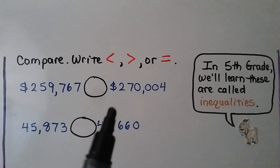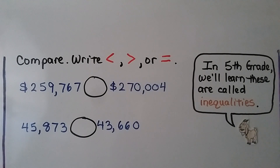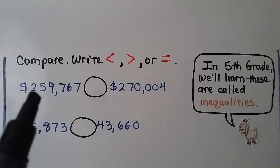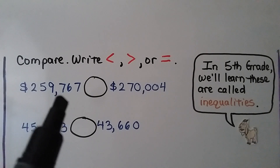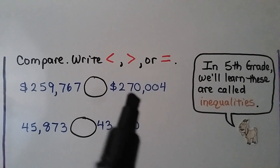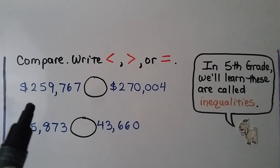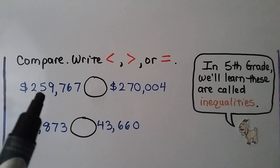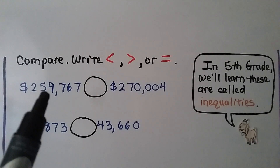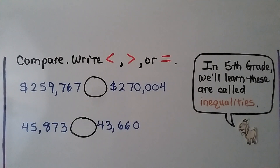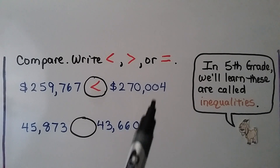We need to compare these numbers and write a less than, greater than, or equal to sign in the circle. We have money: $259,767 and $270,004. They both have a 2 in the hundred thousands place, so we look at the next digit. This has a 5 in the ten thousands place; this has a 7. Because 5 is less than 7, 259,767 is less than 270,004 dollars.